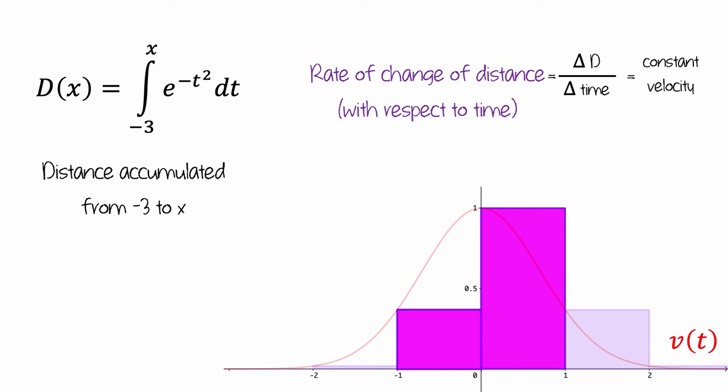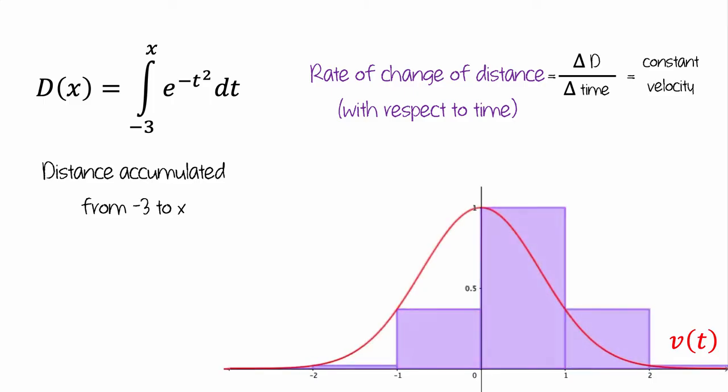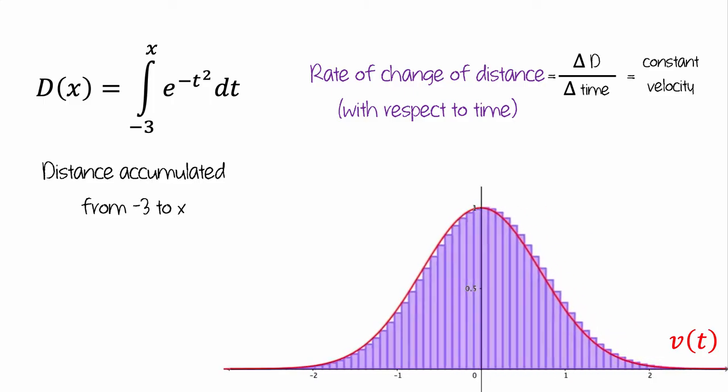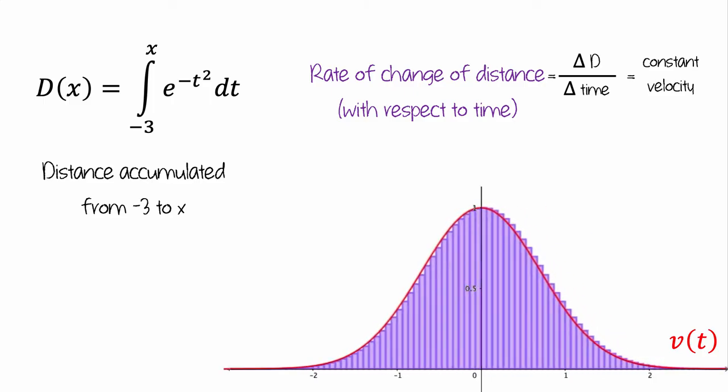And we can imagine doing this using a Riemann sum that had much shorter intervals. In particular, for each value of x, the rate at which we would accumulate area would be given by the height of the graph. That is, the rate of change of distance would be given by the value of the velocity function.